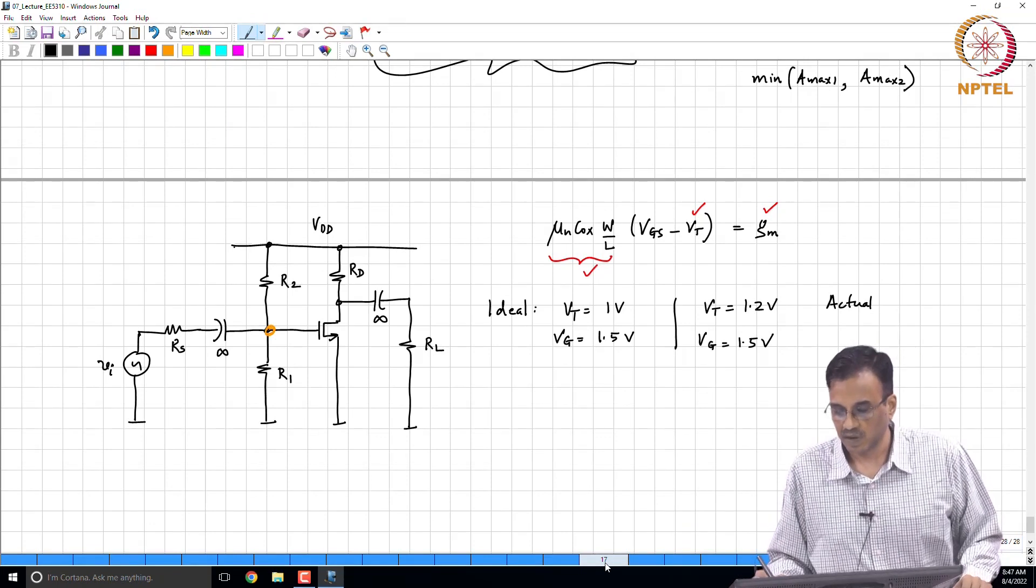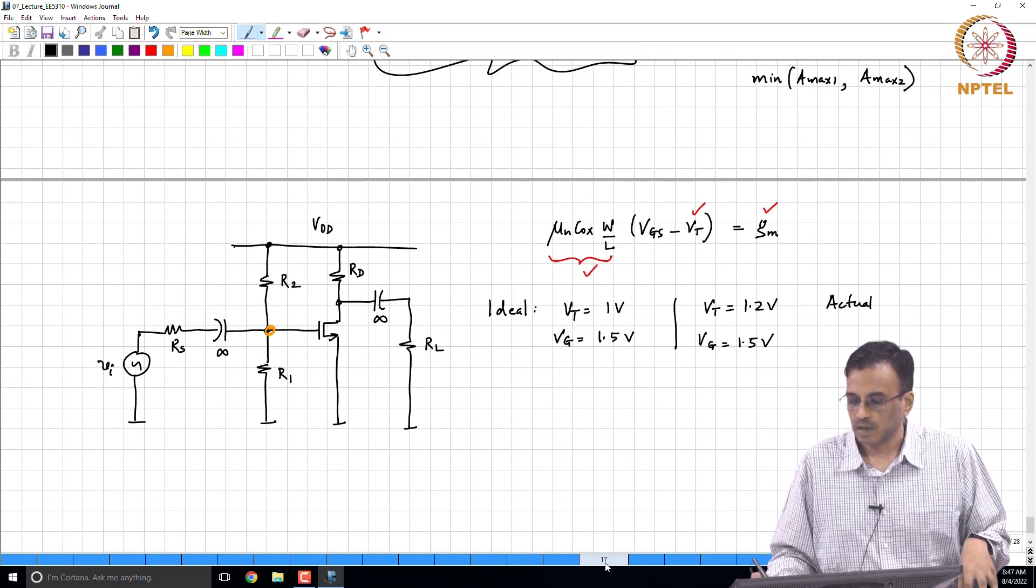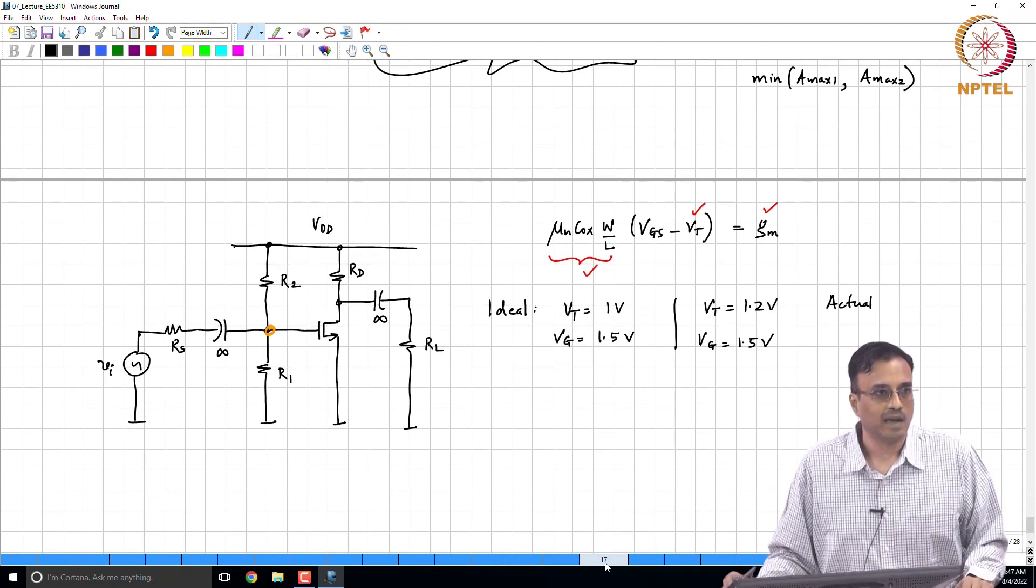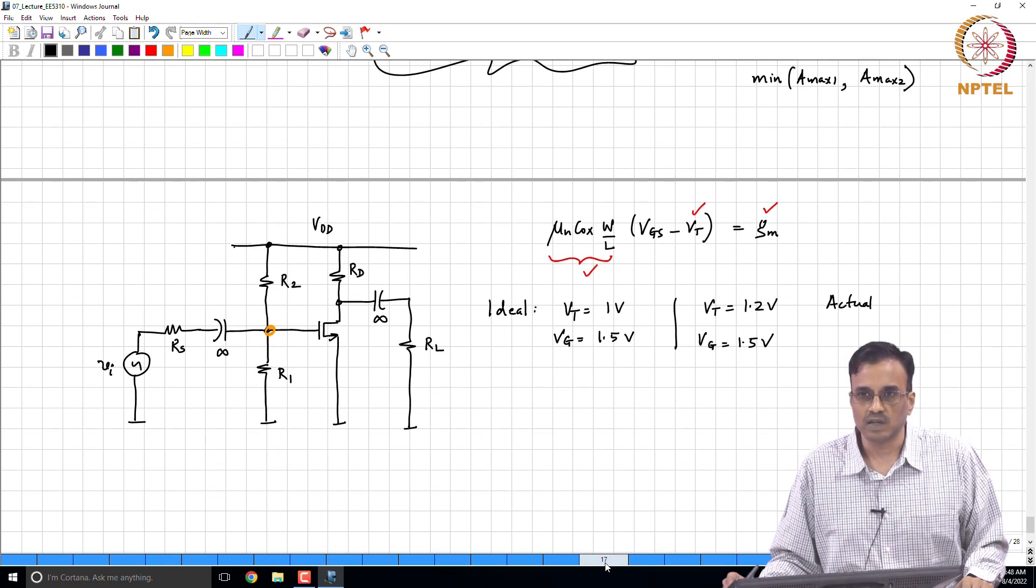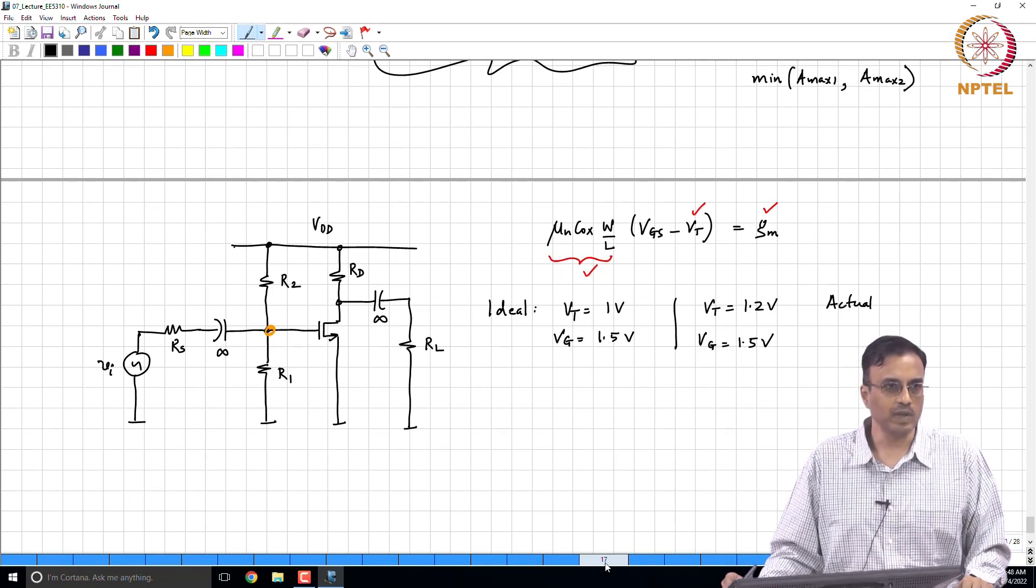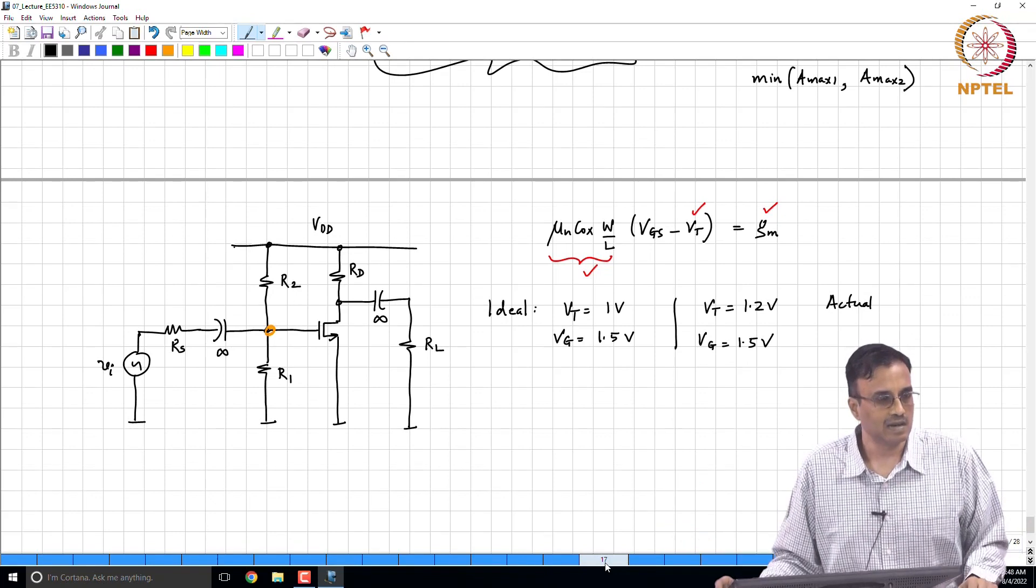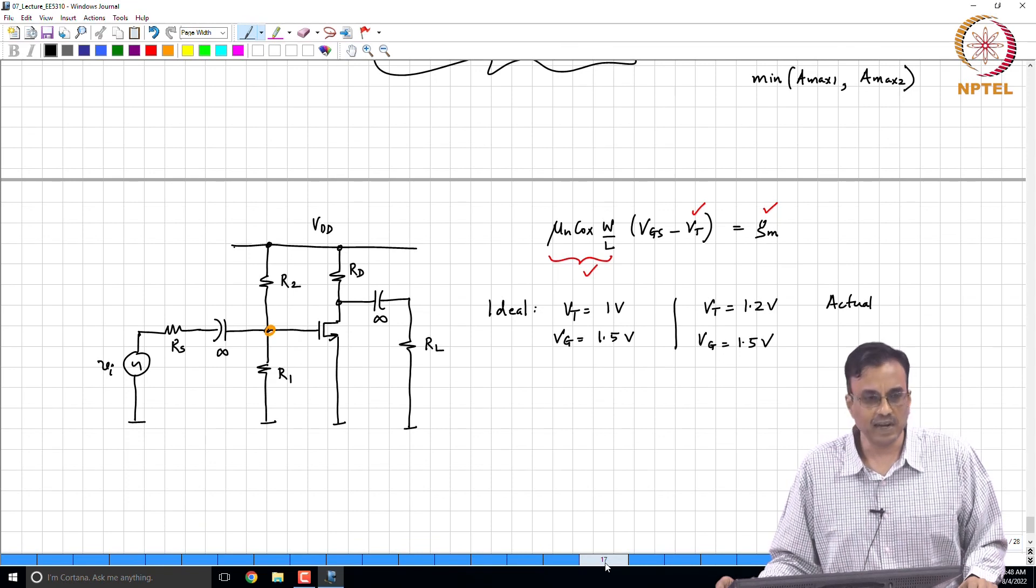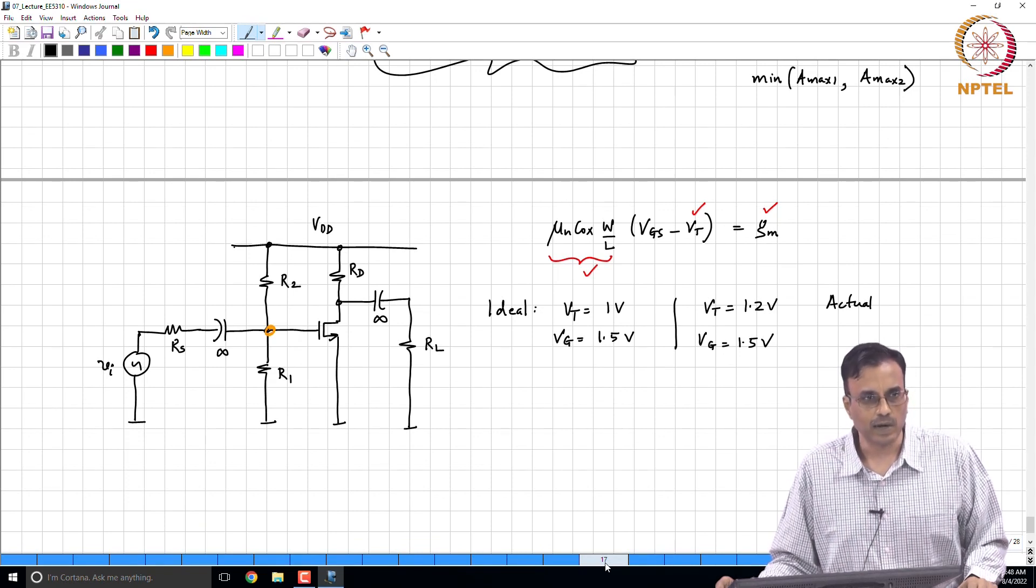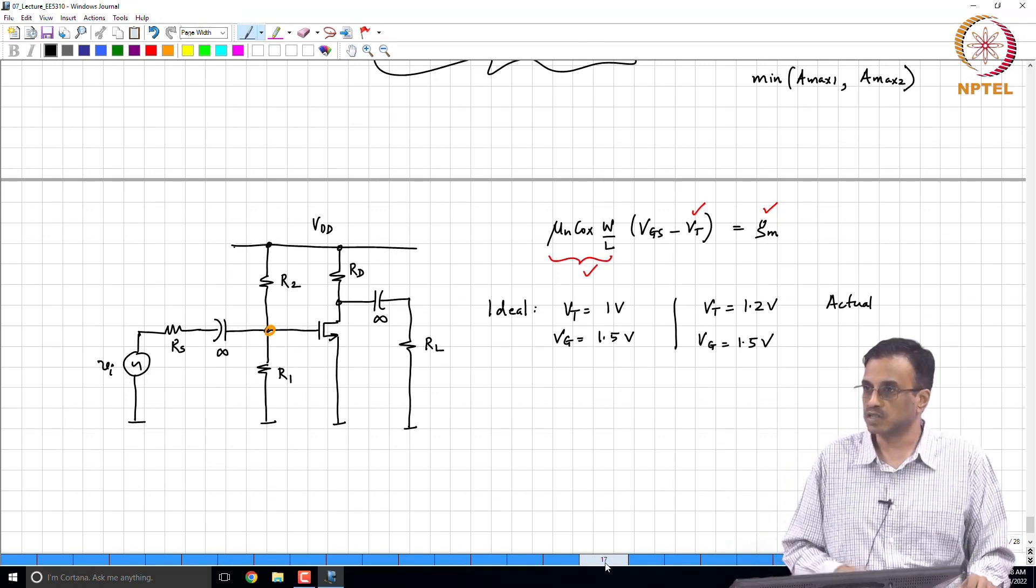So what has happened all of a sudden? The g_m which was mu_n C_ox W/L times half a volt has now become 0.3 volts. And therefore the transconductance is reduced. As a consequence, what comment can you make about the incremental gain? Incremental gain is changed. And not only that, the swings also will change. So you can see that this is quite a disruption. Likewise, this is just merely with a threshold voltage change.